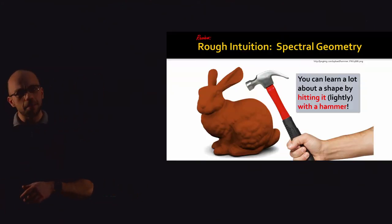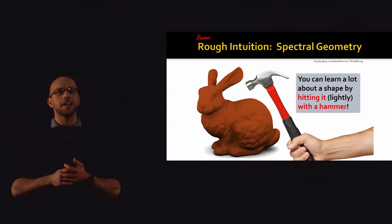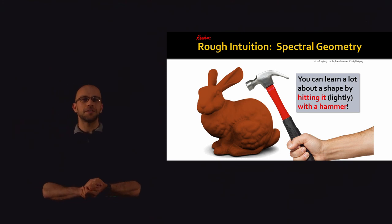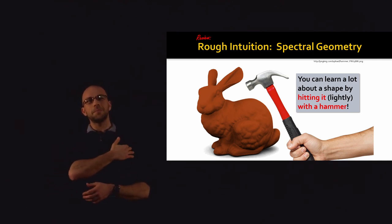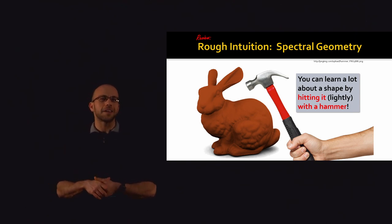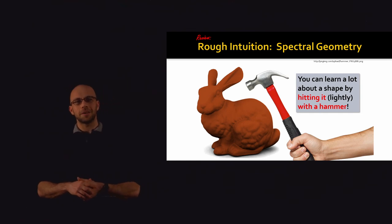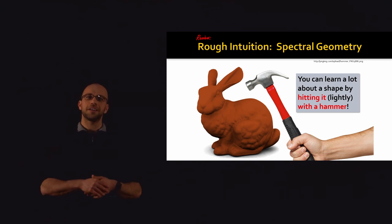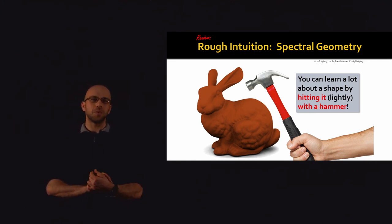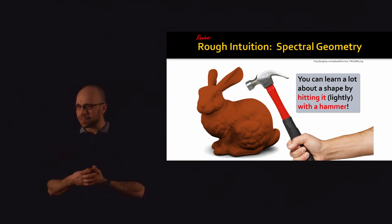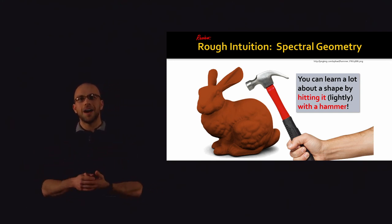Let's start with a little bit of review. These lectures are basically in a space known as spectral geometry. The idea of spectral geometry is that you can learn a lot about a shape by hitting it with a hammer and observing its vibration frequencies, as well as the patterns that those vibrations make along the surface. Several lectures ago, we motivated that through the wave equation, which describes vibration. The eigenmodes of the Laplace operator are the main standing waves you see along the surface.